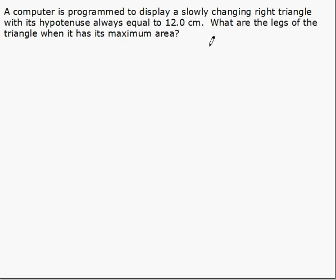We can begin by drawing a sketch, labeling our sketch so we know what we're attempting to do. We can call our sides, or our legs, A and B. It's a right triangle, and the hypotenuse is constant at 12.0.